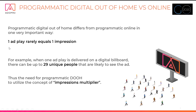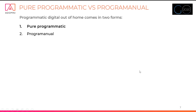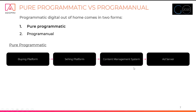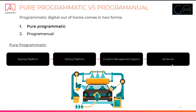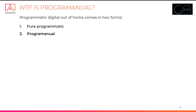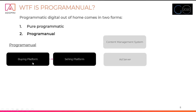When you think of programmatic, there are two main concepts: pure programmatic and programmatic manual. In a pure programmatic world, the whole system is fully connected — the buying platform connects to the selling platform, which connects to the content management system, which connects to the ad server software on the actual digital devices. You can think of it like a touchless car wash: you purchase automatically, drive through, and not a single person is involved in cleaning your car.